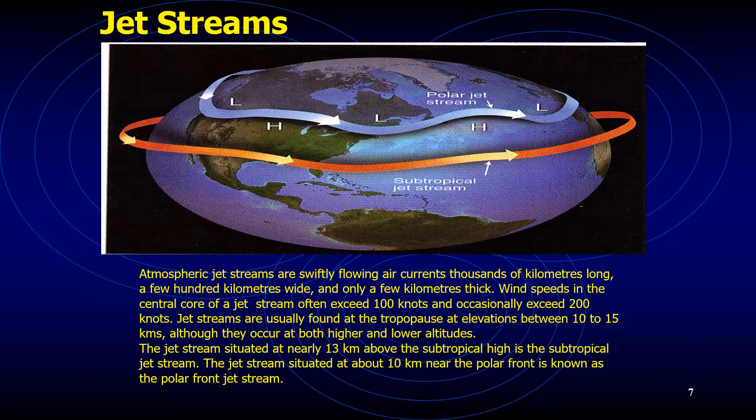Since air above the storm is being removed more quickly than converging surface winds can supply air to the storm center, the central pressure of the storm starts to drop rapidly. As surface pressure gradients increase, wind speed increases. The high pressure area, a region of converging air, feeds air downward into the anticyclone.